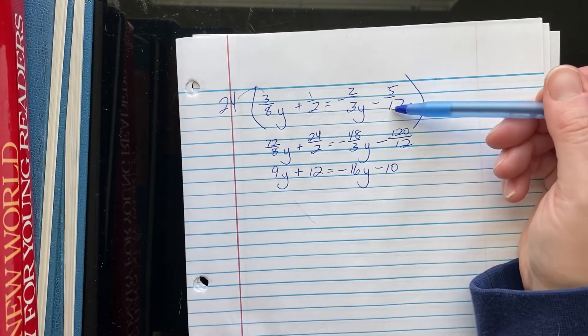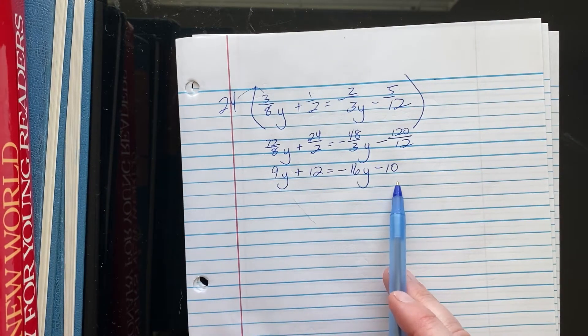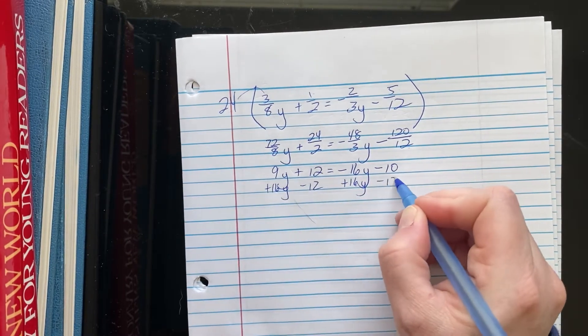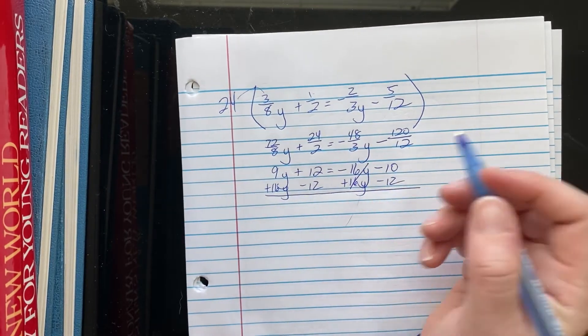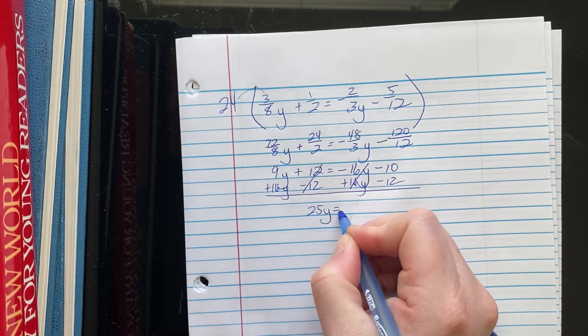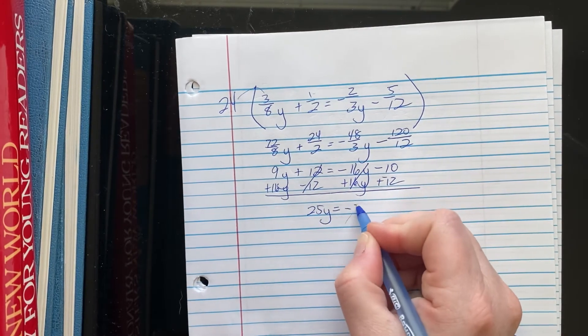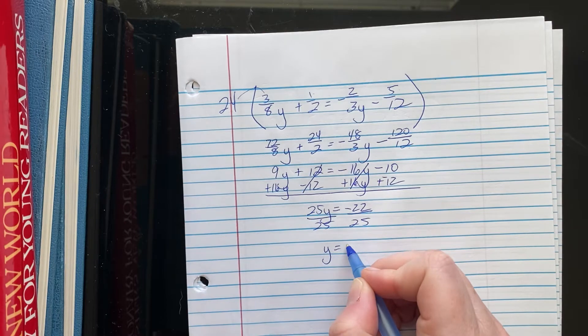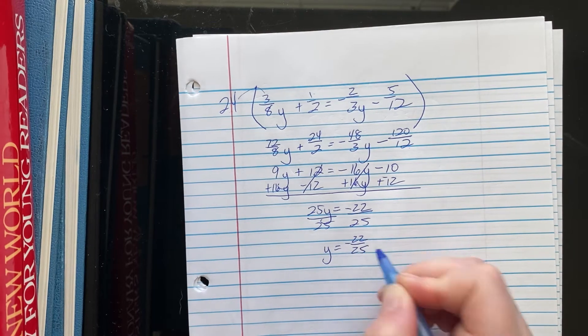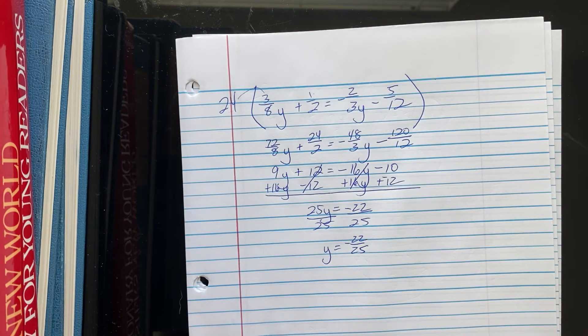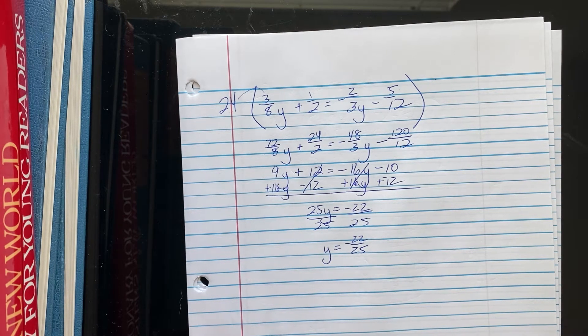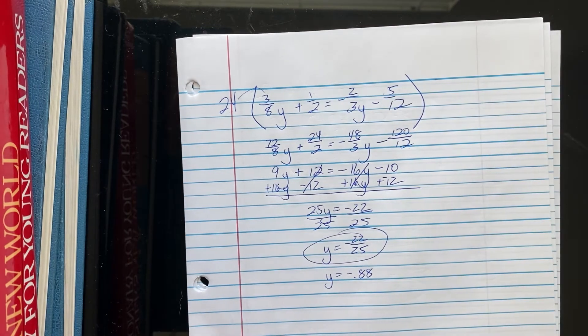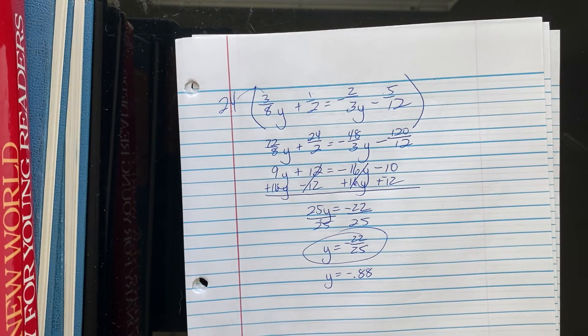It went from really kind of disgusting fractions down to these beautiful integers where I can add 16Y to both sides and subtract 12 and get 25Y equals negative 22, dividing by the coefficient. Y equals negative 22 25ths. You could absolutely write that as a decimal. I think it's going to be 88 hundredths. Same answer that we would have gotten up here, but I don't have to use all those crazy fractions to do it.